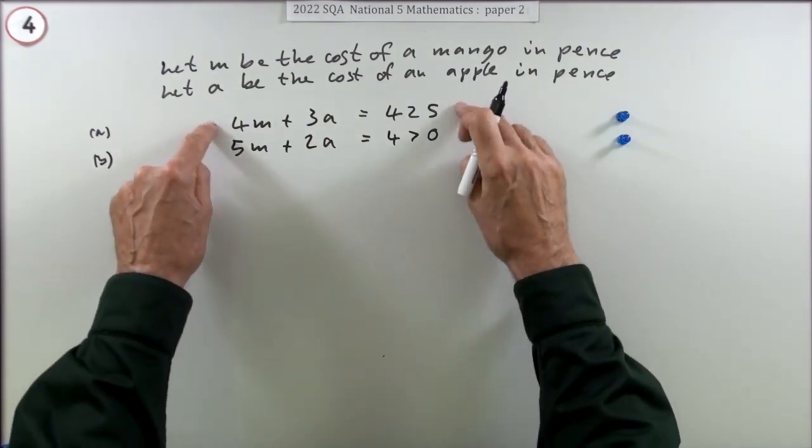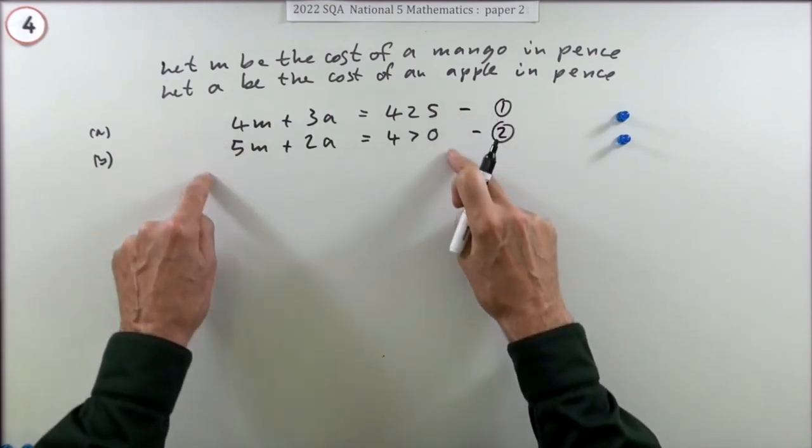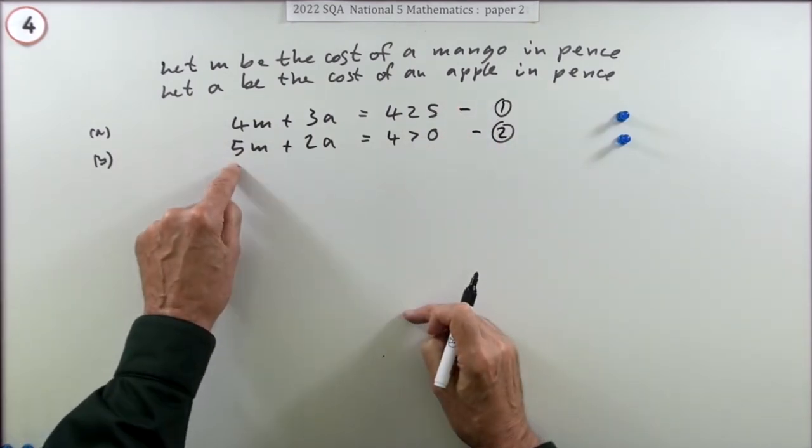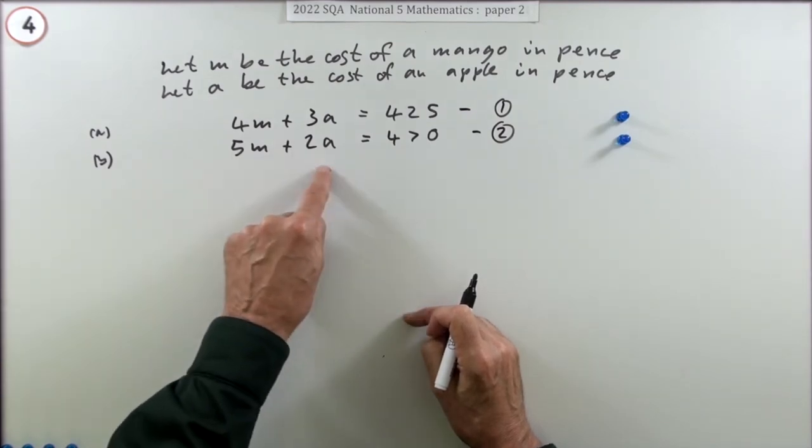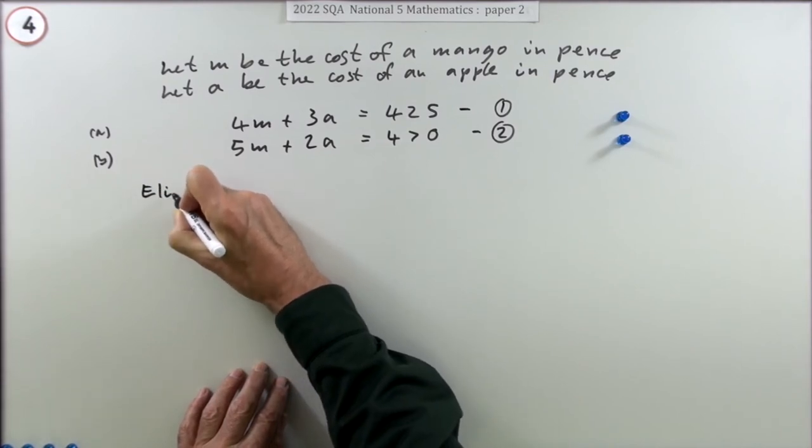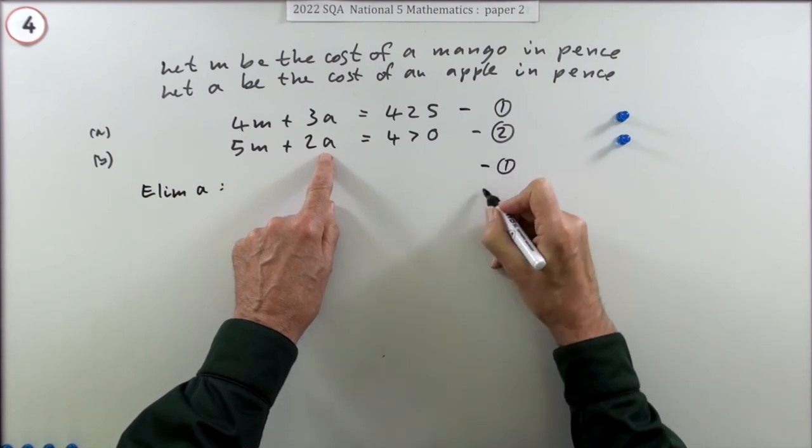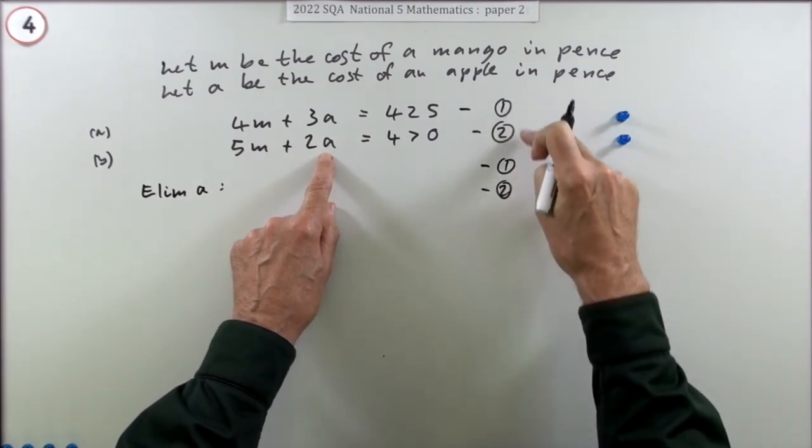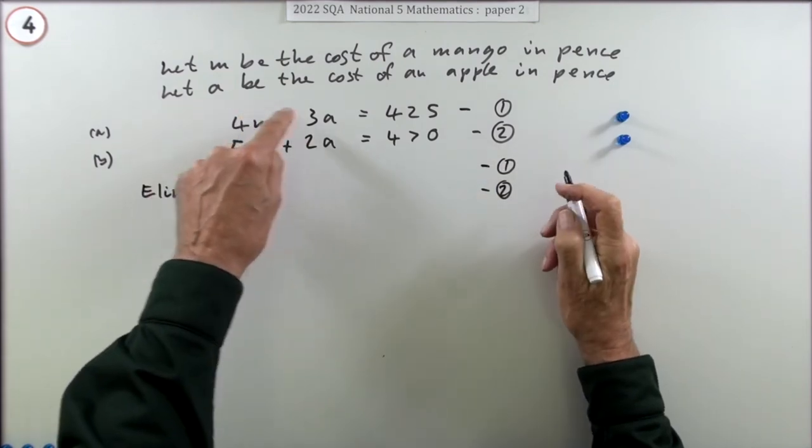Algebraically find the cost of a mango and an apple. I wanted them both beside each other here so I could give them names one and two. I'm going to scale them to get the same number of m's or a's, whichever is easier. It'll be easier to get a's the same. I'm going to eliminate a.